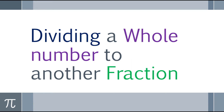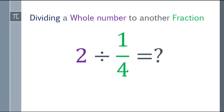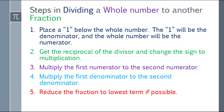So next topic: dividing a whole number by a fraction. Let's say we have to divide by one-fourth. We have five steps in doing this one. First step: place a one below the whole number — the one will be the denominator, and the whole number will be the numerator. Second, get the reciprocal of the divisor and change the sign to multiplication. Third, multiply the first numerator by the second numerator. Fourth, multiply the first denominator by the second denominator. And lastly, reduce the fraction to lowest term if possible.